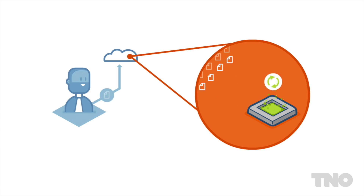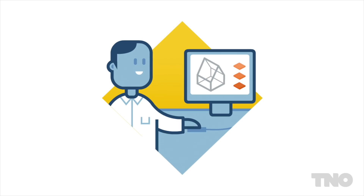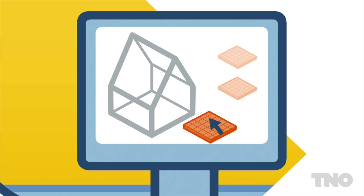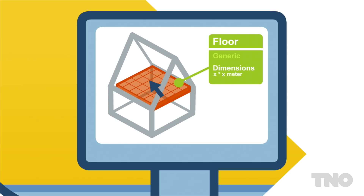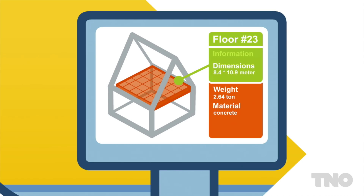This bot evaluates the whole building and suggests use of the objects of the supplier in the correct way. The BIM bot is an intelligent agent rather than a dumb object library. After subscribing to the BIM bot of the supplier, the designer can use the default object libraries from his favorite BIM authoring tool. After triggering the BIM bot of the supplier, the whole building is evaluated and the generic objects are extended with much more detailed geometry and semantic information.